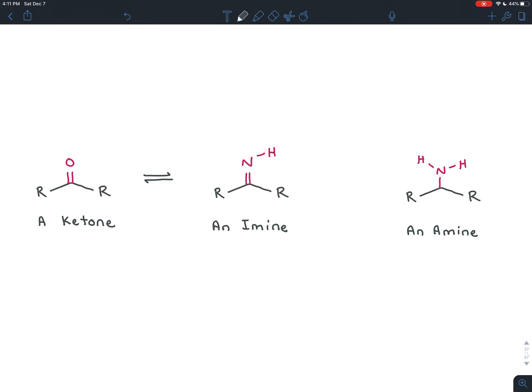And then we can take this imine that now has the nitrogen on there. And you can reduce the number of bonds to the electronegative element with a reducing agent. And that will give you your amine.